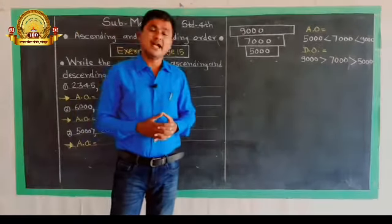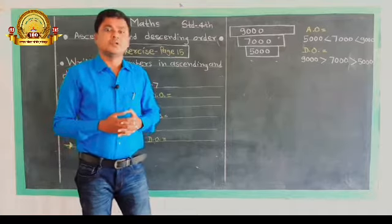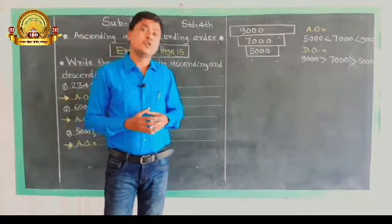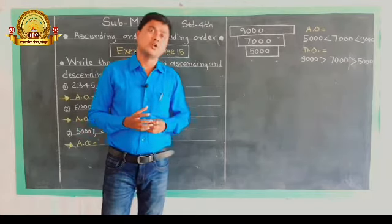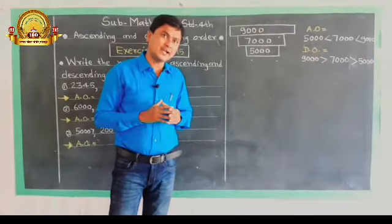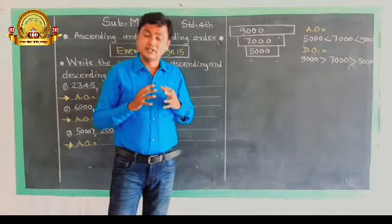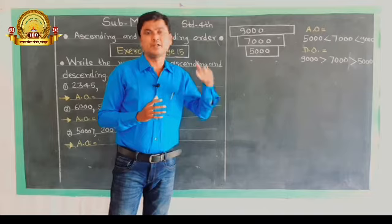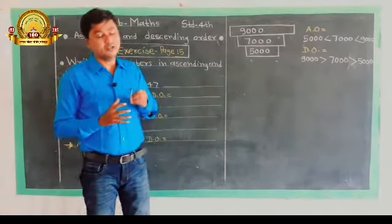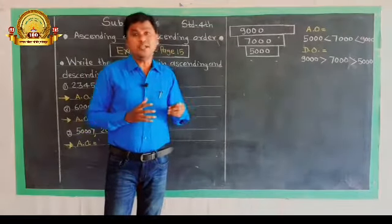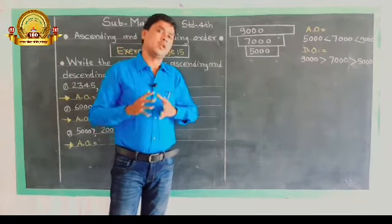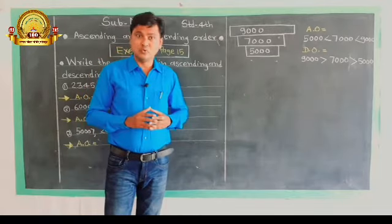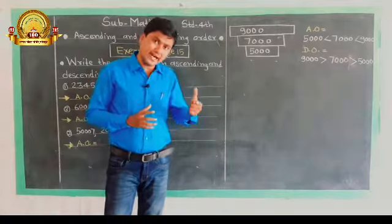What is meant by ascending order? Ascending order means 'chadhatakram' — in ascending order we arrange the given numbers from smaller to bigger. And what is meant by descending order? In descending order we arrange the given numbers from bigger to smaller. Descending order means 'utartakram' — in this order we arrange numbers starting from the biggest going to the smallest.